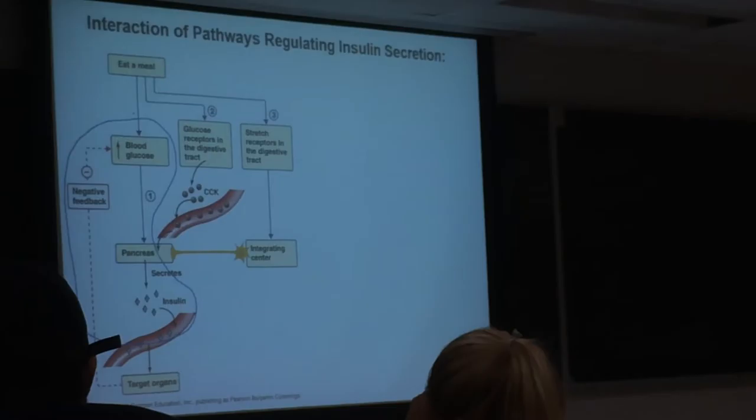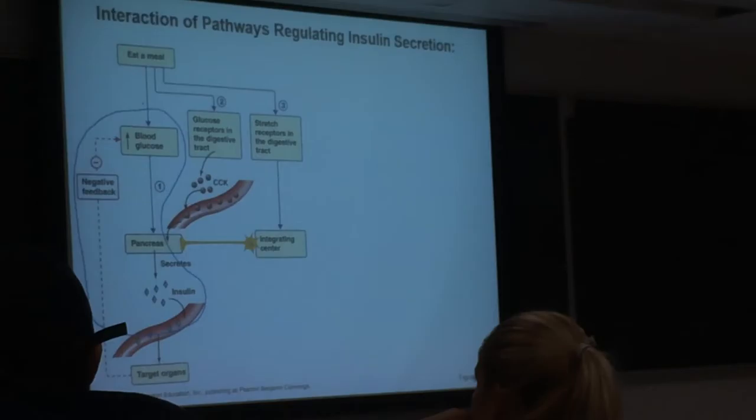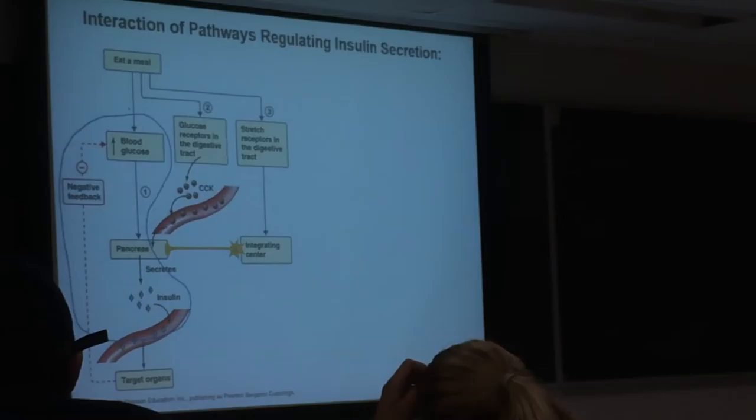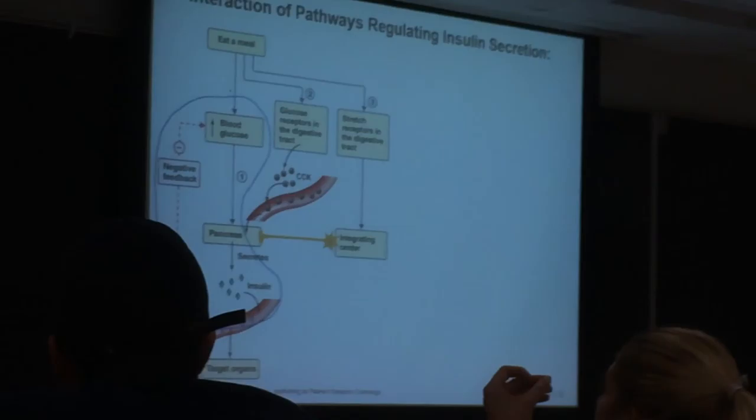Pathway number three shows us that there are also sensory neurons within the walls of the digestive tract. When you consume a meal, you're bringing it into the tube-like structure of the intestinal tract. There are stretch receptors found in the wall of the digestive tract — the meal is going to stretch the digestive tract, activate those stretch receptors, and then they send information to the pancreas by way of a neural pathway.